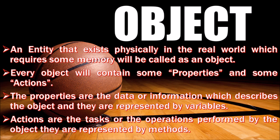For example, if you take a car, the car has a model, company, and other attributes. The properties are the data or information which describes the object. For example, car color, car model, car company, car weight, car height, car width — these are the properties of the car object.